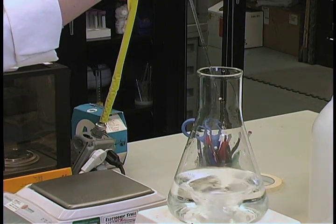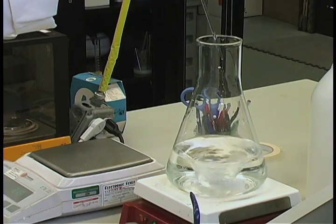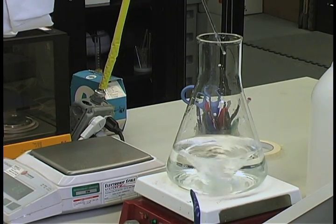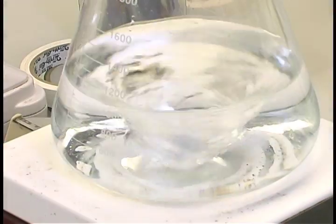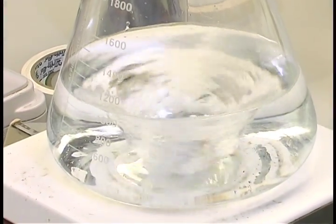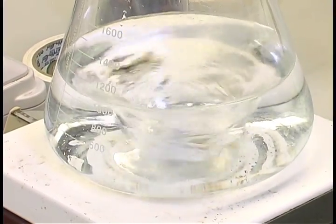Most vitamin stocks are added at one mil per liter of medium prepared. Most plant growth regulator stocks are added at one mil per liter to achieve a final concentration of one milligram per liter of medium. Always check the product label to determine the proper concentrations.